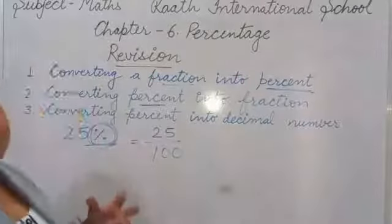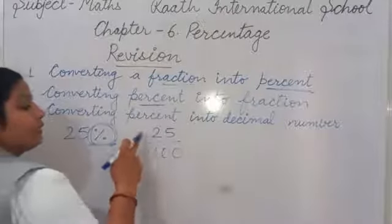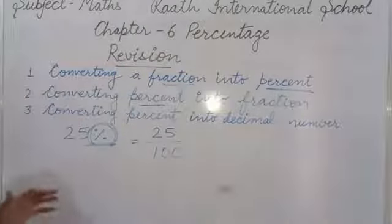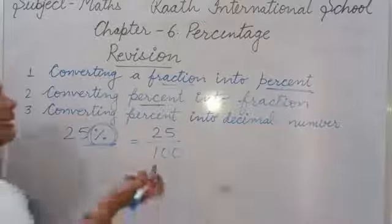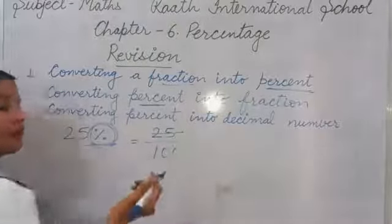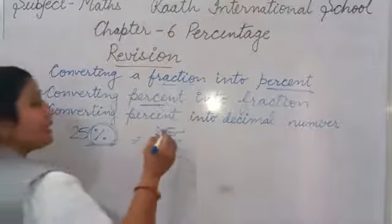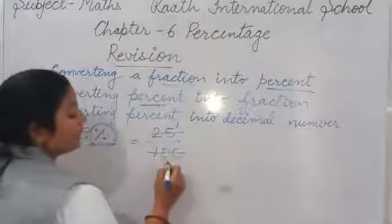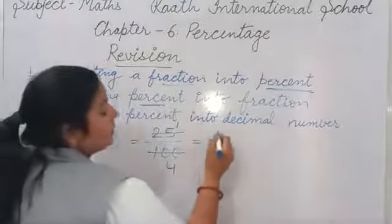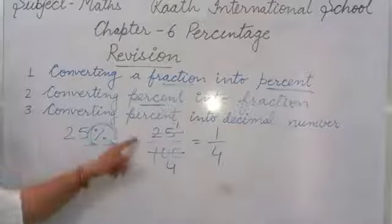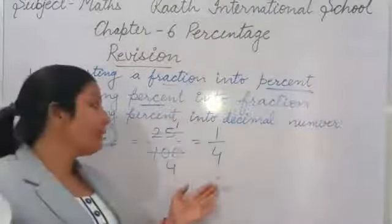We can see that 25 and 100 both come in the 25 times table. So we divide both by 25. In the 25 table, 25 ones are 25, and 25 fours are 100. So it becomes 1 upon 4. This is the lowest term fraction.